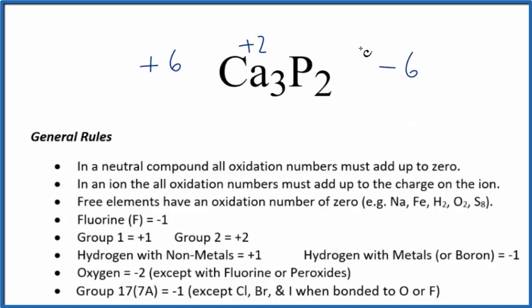So two times something would give us minus six. Two times minus three, that equals minus six.